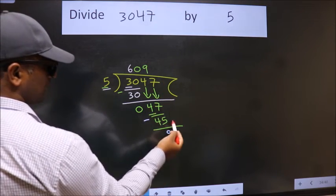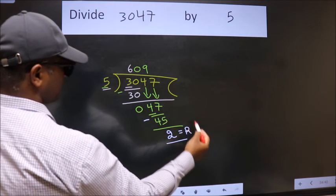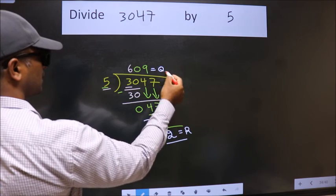No more numbers to bring it down, so we stop here. This is our remainder. This is our quotient.